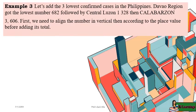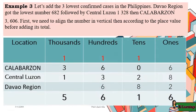Example number three: let's add the three lowest confirmed cases in the Philippines. Davao region got the lowest number 682, followed by Central Luzon 1,328, then Calabarzone 3,606. First, align the numbers vertically according to place value before adding the total. Therefore, the total number of confirmed cases in Davao region, Central Luzon, and Calabarzone is 5,616.